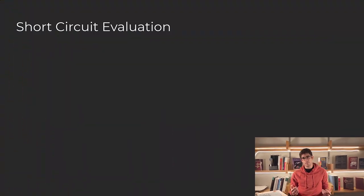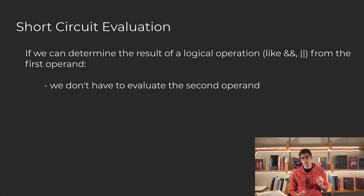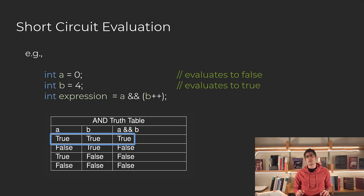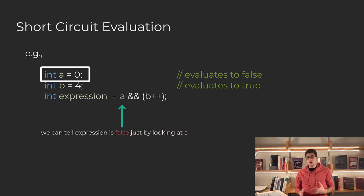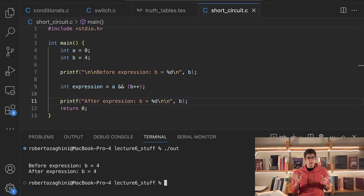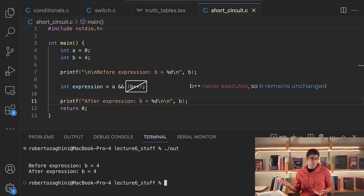Another concept that is very important to keep in mind when using logical operators like AND and OR is that C supports short circuit evaluation. So if we have a logical expression that uses these operators, like a AND b, short circuit evaluation tells us that if we can tell the truth value of this operation just by using the first operand, we won't even have to evaluate the second operand — we can just return the result. For example, we know a AND b only returns true if a is true and b is true. So if a is false, we know a AND b must be false, and we don't even look at b. This is very important to keep in mind because these logical expressions could have side effects like i++ or j++.